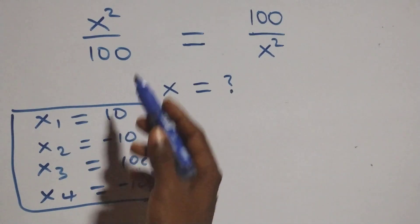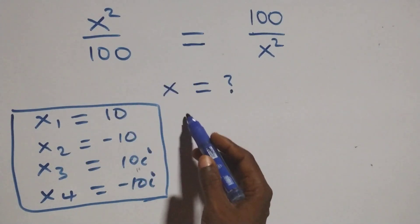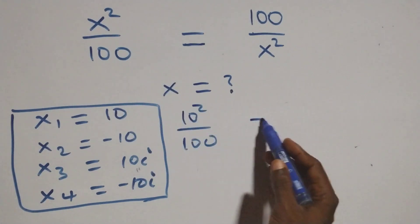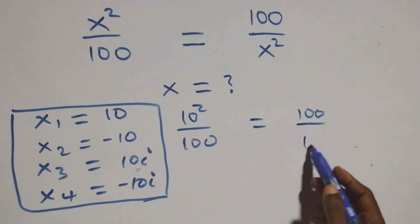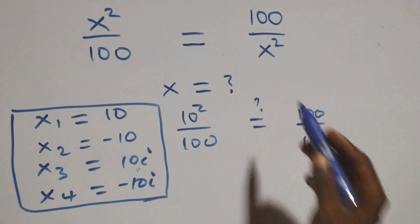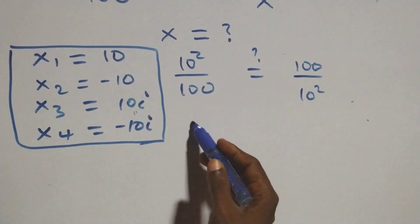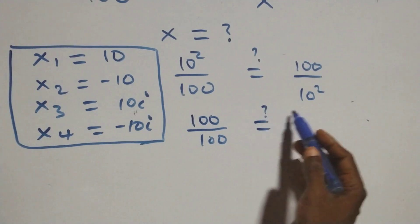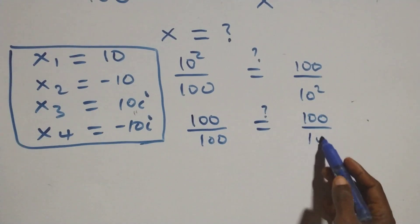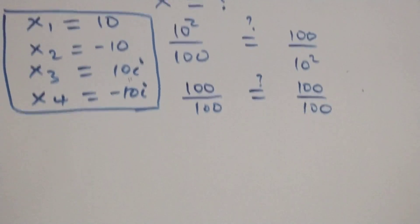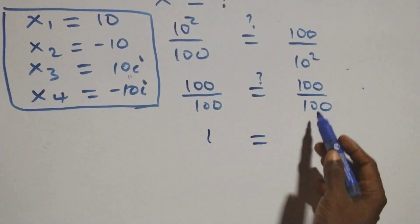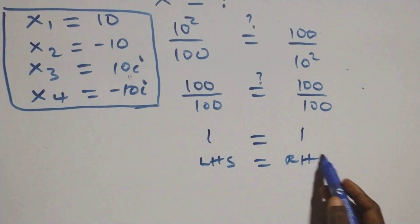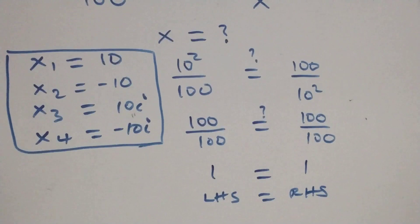Checking x equals 10: the equation becomes 10 squared over 100, which equals 100 over 10 squared. That is 100 over 100, which equals 100 over 100. So 1 equals 1 — left-hand side equals right-hand side. Therefore x equals 10 satisfies the given problem.